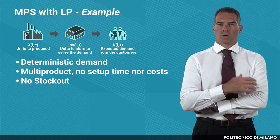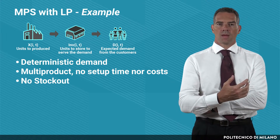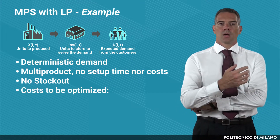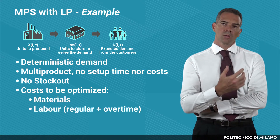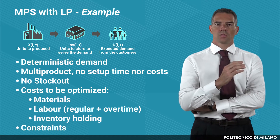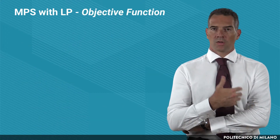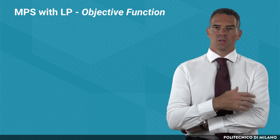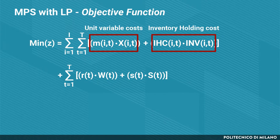No setup time or cost have to be considered. Also, stock-out occurrence is avoided because the cumulative capacity is greater than the cumulative demand. The only costs to be optimized are material costs, labor costs — considering both regular time and overtime — and inventory holding costs. The main constraint to be considered is the workforce capacity. The objective function will have three components: one related to variable costs, one related to inventory holding costs, and one related to workforce costs.